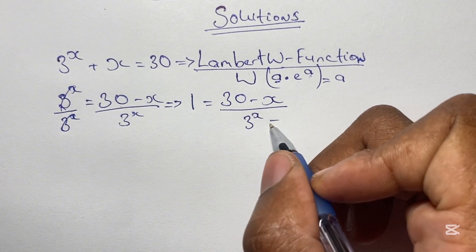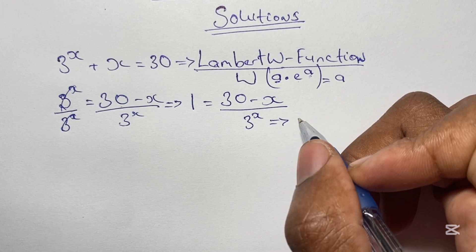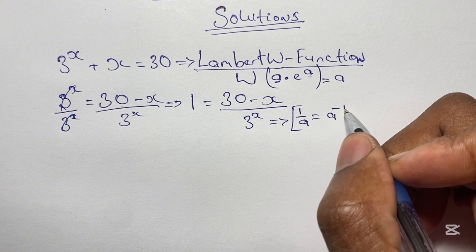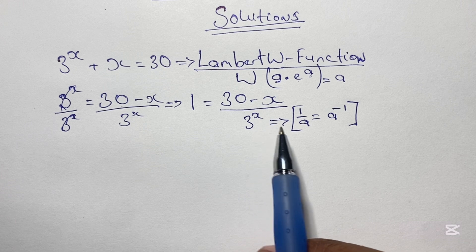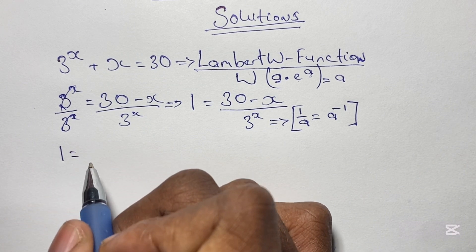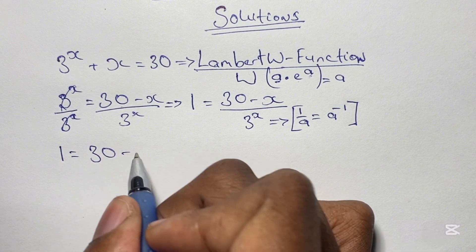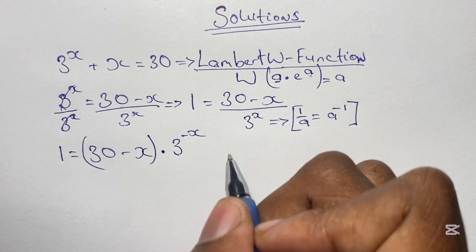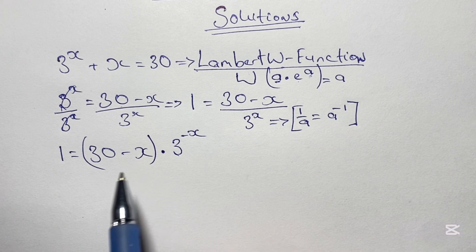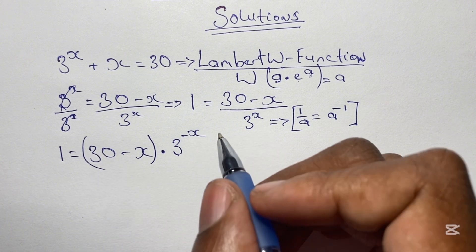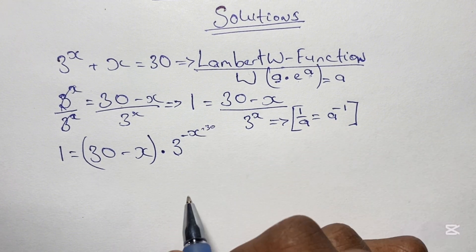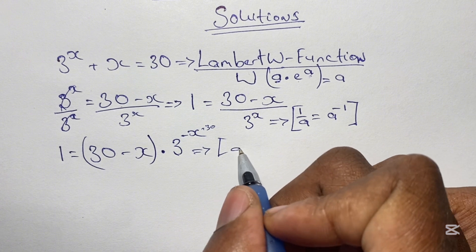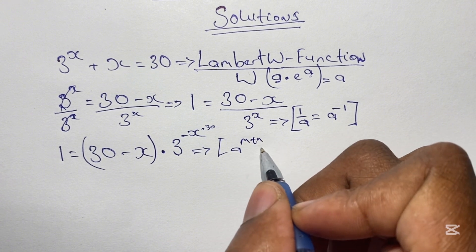Now, using laws of indices, we know that 1 over a can be rewritten as a to the power of negative 1. Applying this to 3 to the power of x, we can have (30 minus x) being multiplied by 3 to the power of negative x. So we rewrite this as 1 equals (30 minus x) times 3 to the power of negative x. Here we have negative x, but we also have 30 — we need 30 in the exponent as well in order to write this in the form of a times e to the power of a.